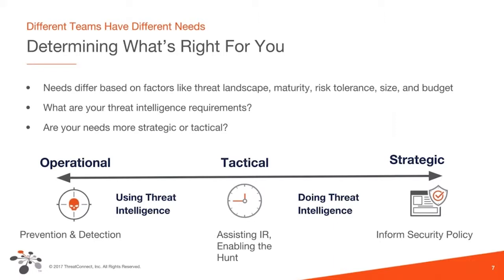Knowing this, different teams have different needs. You will need to make decisions based on your threat landscape, your own security team's maturity, what your risk tolerance is, and some hard decisions within the reality of your team size and budget. One thing that is critical to that decision making process is determining what your threat intelligence requirements are, and then looking at whether you have more strategic or tactical needs. You can start using threat intelligence as something you bring in to help drive decision making, but as you grow in maturity, you can begin to look at threat intelligence more as a process that you do, not just something that you use.